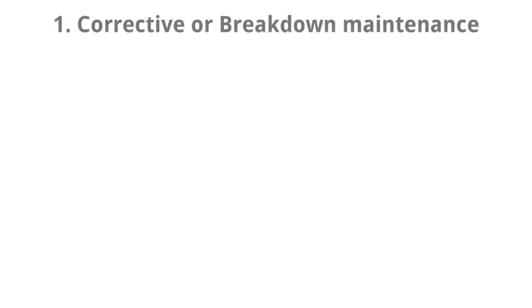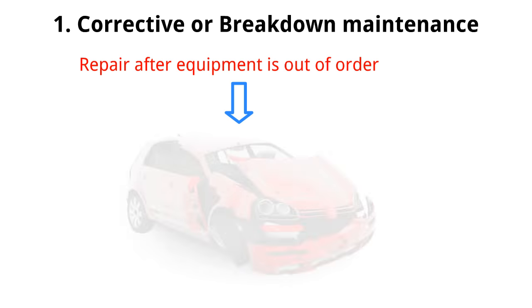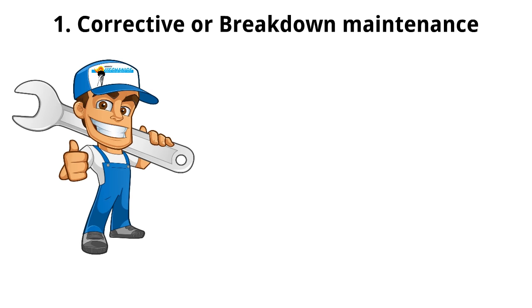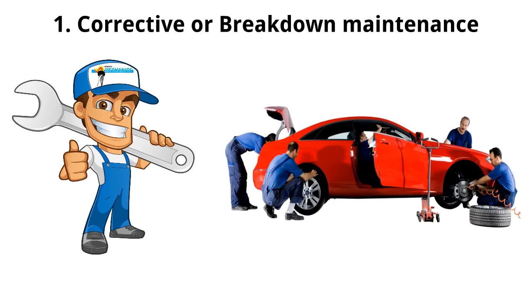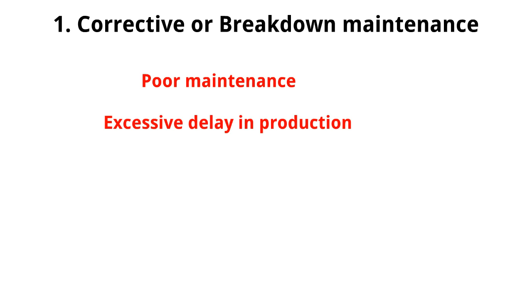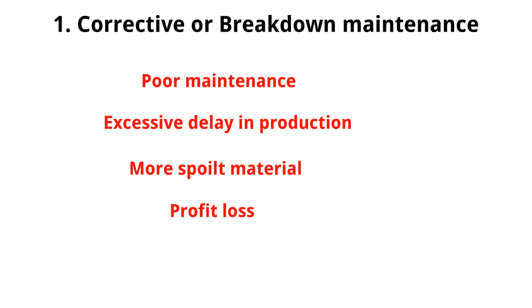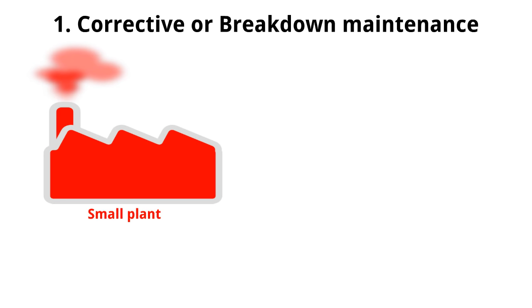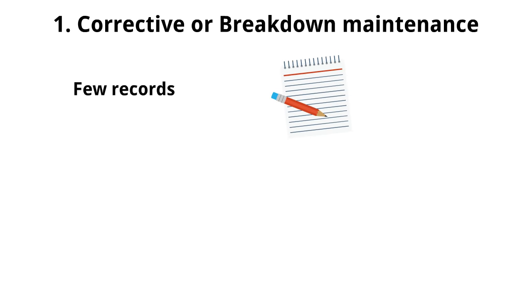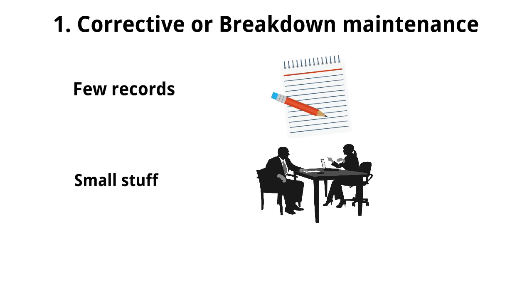1. Corrective or breakdown maintenance. In corrective or breakdown maintenance, repairs are made after the equipment is out of order and it cannot perform its normal function. In that case the maintenance department comes into action and makes necessary repairs after checking; they do not attend the equipment until another breakdown occurs. Breakdown leads to poor maintenance, excessive delays in production, more spoilt material, and profit loss. This type of maintenance is justified for small plants where there is no financial justification for the equipment. Corrective or breakdown maintenance needs few records and small staff.